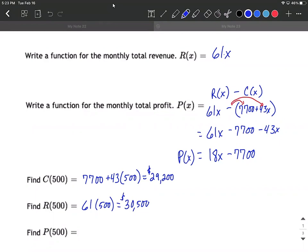And finally, our profit. One way to get this profit would be taking the revenue, 30,500, minus the cost of producing 500 outfits, 29,200, subtracting those. Or we could use the function that we came up with, 18 multiplied by 500 minus 7,700. So in this case, I believe we get $1,300 profit.